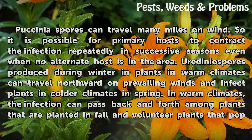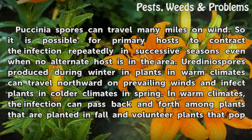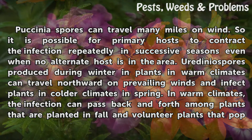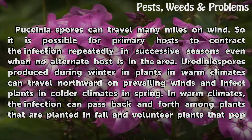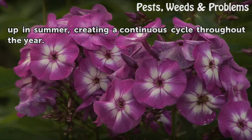Vaxenia spores can travel many miles on wind, so it is possible for primary hosts to contract the infection repeatedly in successive seasons even when no alternate host is in the area. Uridinium spores produced during winter in plants in warm climates can travel northward on prevailing winds and infect plants in colder climates in spring. In warm climates, the infection can pass back and forth among plants that are planted in fall and volunteer plants that pop up in summer, creating a continuous cycle throughout the year.